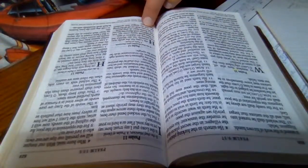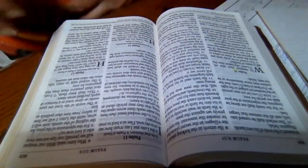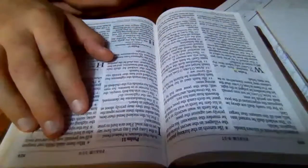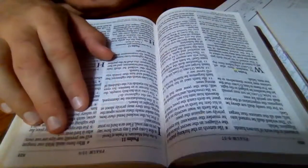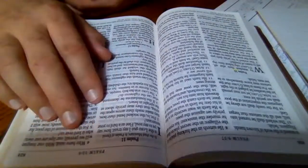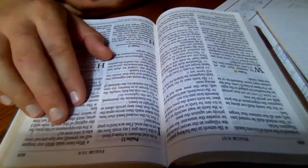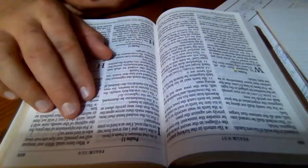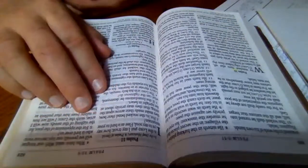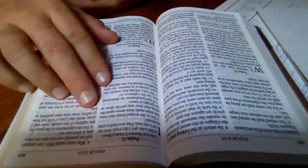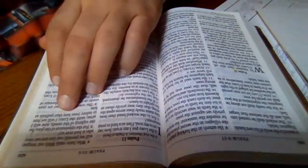The Lord shall cut off all flattering lips and the tongue that speaketh proud things, who have said, 'With our tongue will we prevail. Our lips are our own. Who is lord over us?' For the oppression of the poor, for the sighing of the needy, now will I arise, saith the Lord. I will set him in safety from him that puffeth at him.